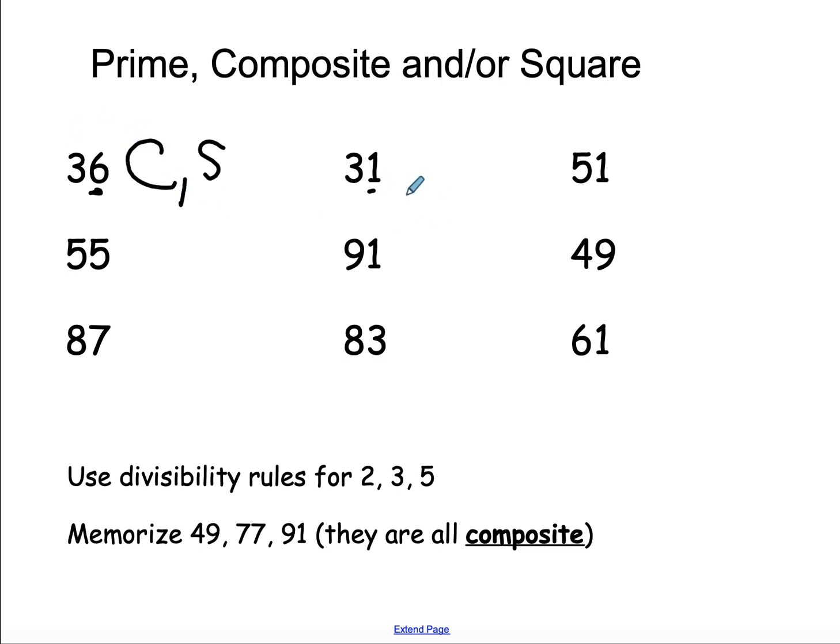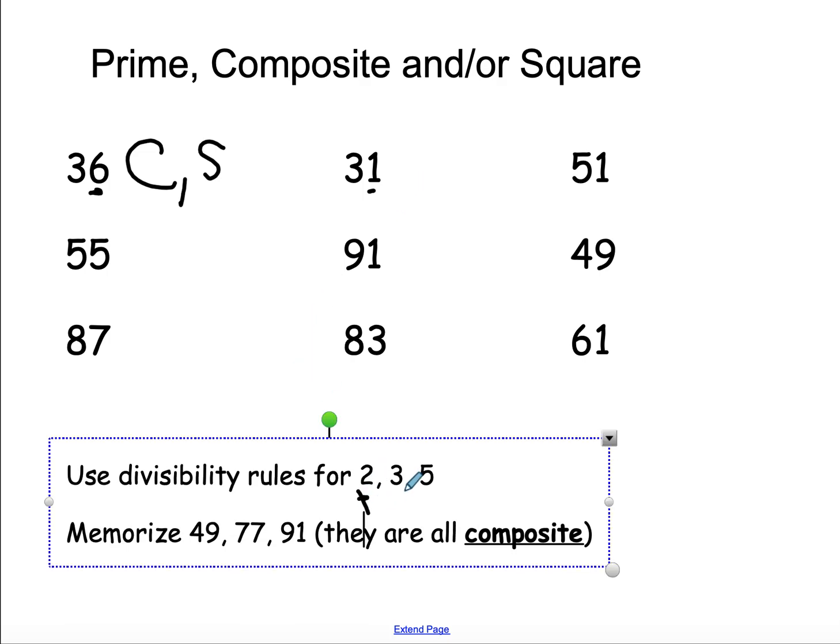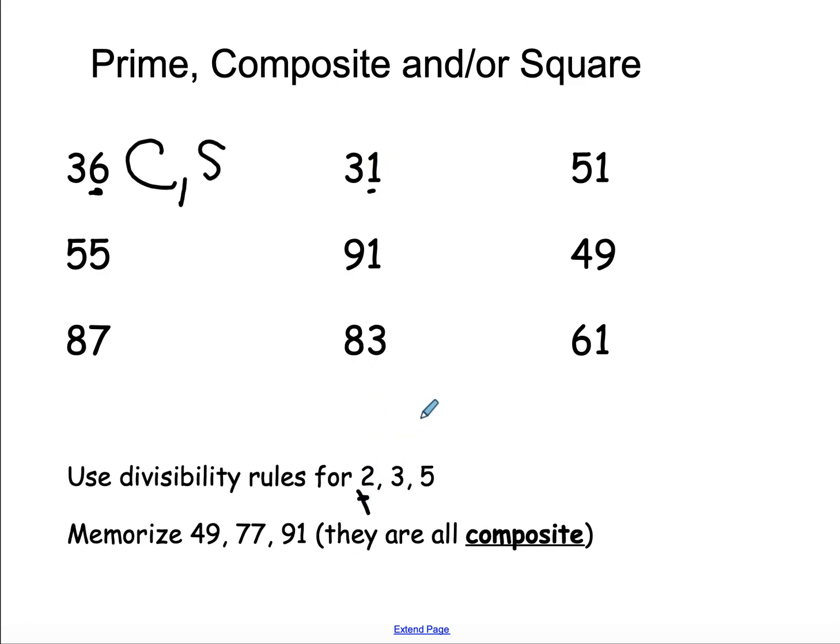31, if I think of my divisibility rules, it's not divisible by 2. I add up my digits, 3 plus 1 is 6, or 3 plus 1 is 4, so it is not divisible by 3. It does not end in a 5 or a 0, so it's not divisible by 5. It's not one of the numbers I need to memorize. It is prime.